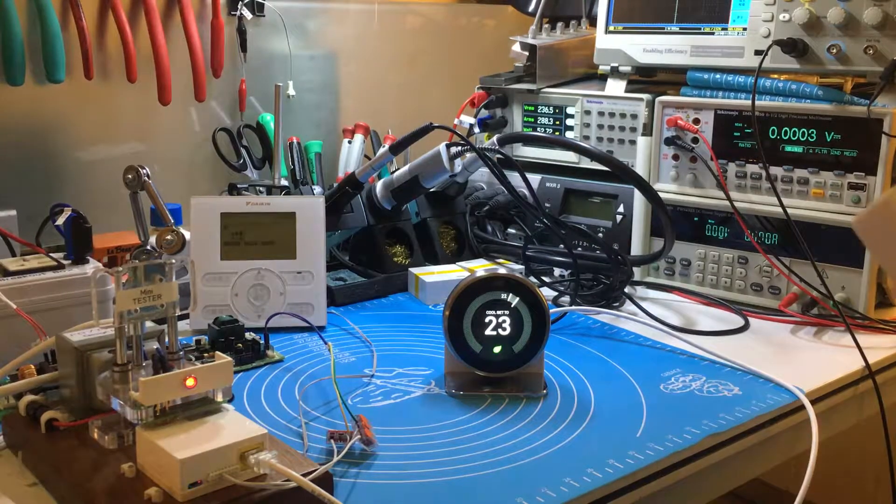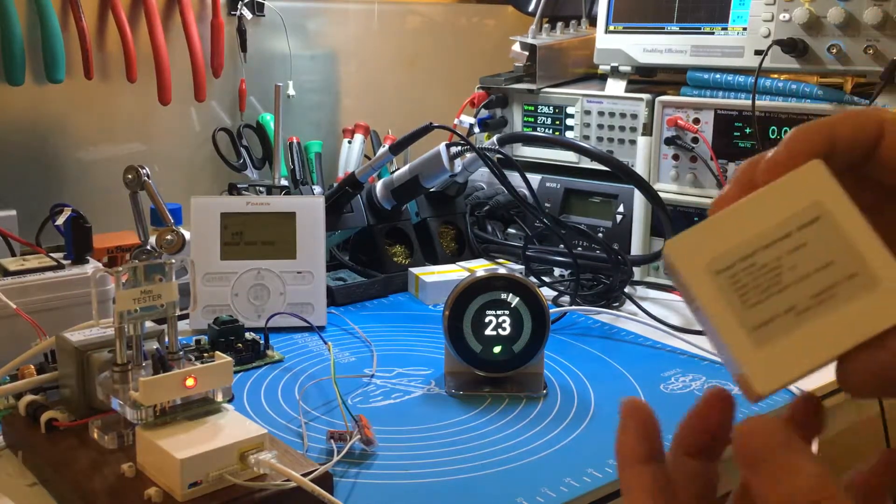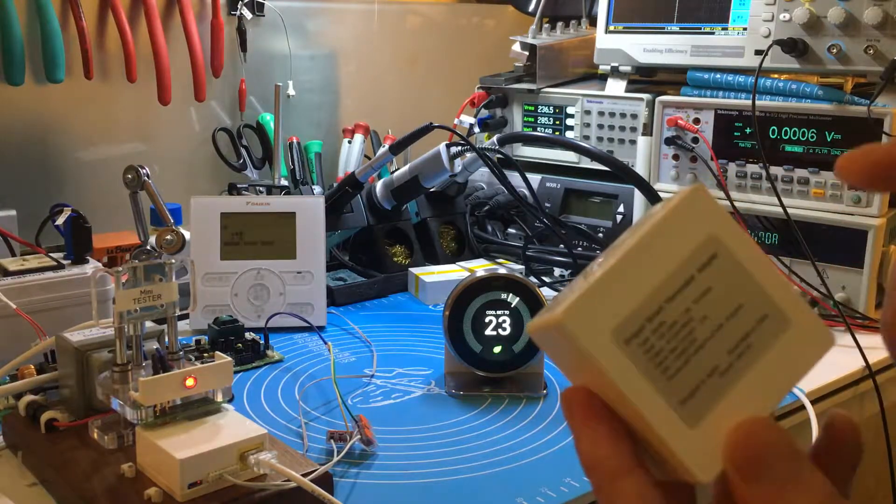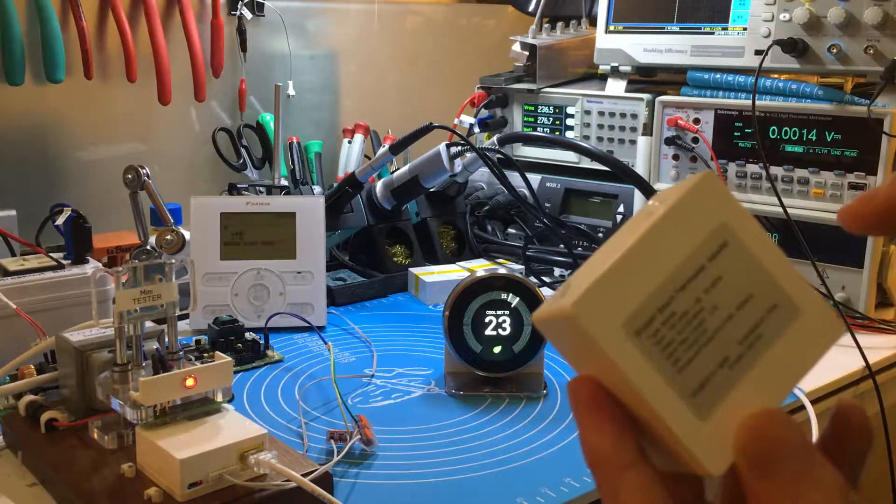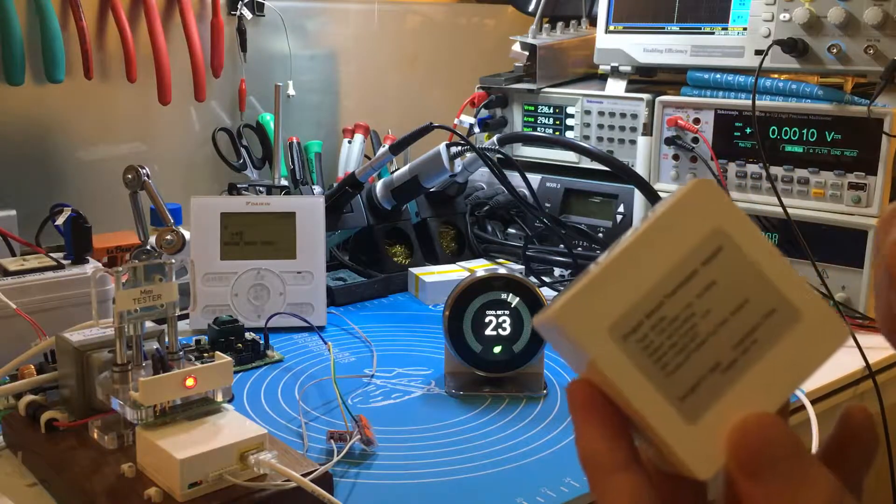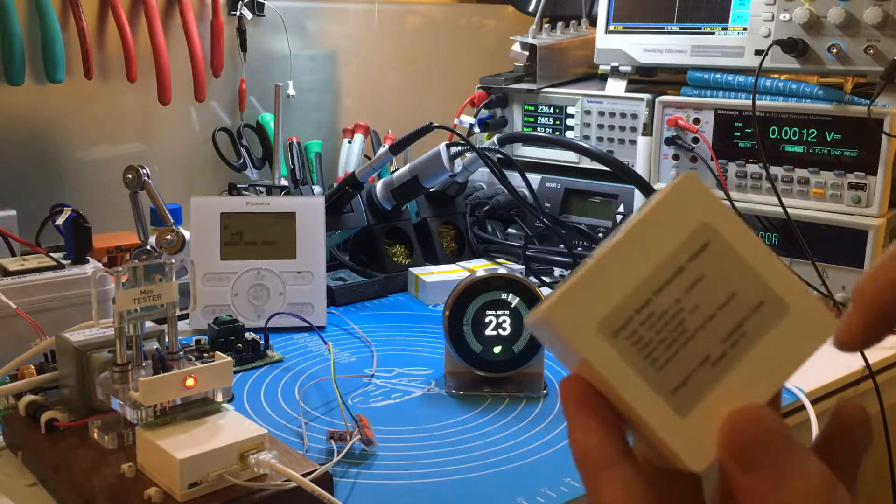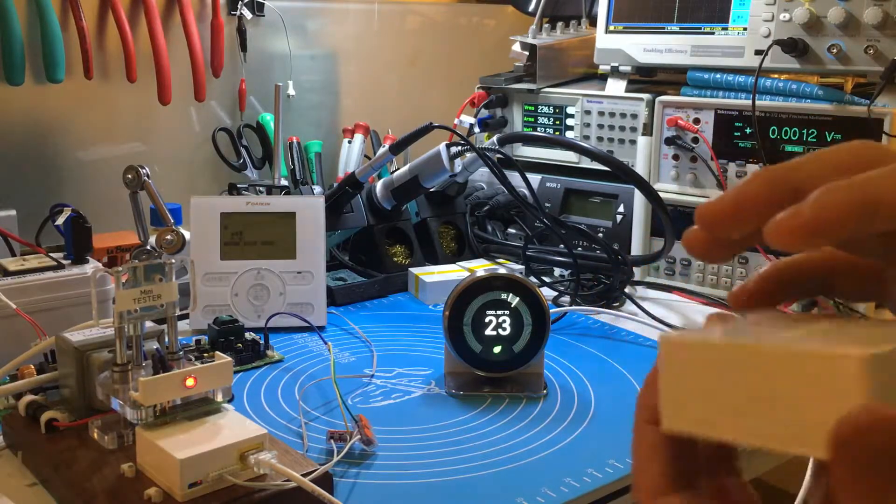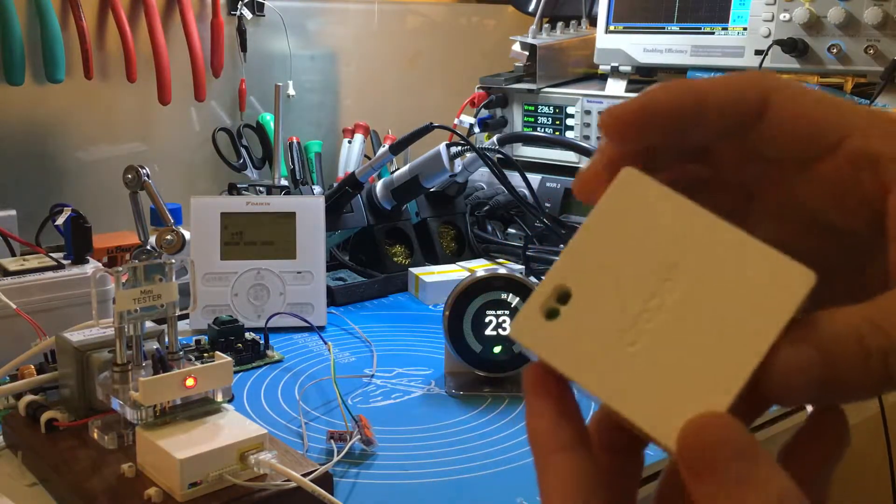Now let me introduce our new adapter for Daikin air conditioning system. The adapter model is Mini 6S. It is designed in our Japan lab and same in China. This size is the same as the Mini 6S.